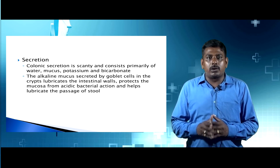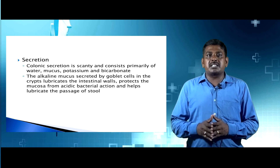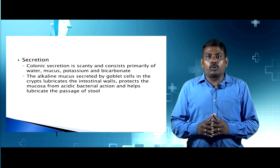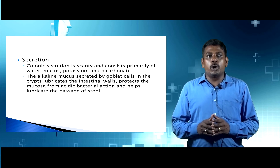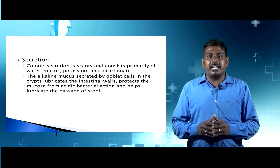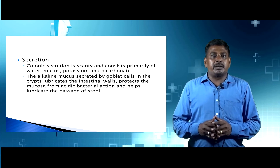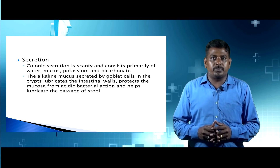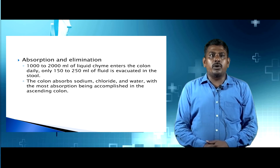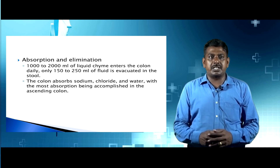Colonic secretion is scanty and consists primarily of water, mucus, potassium, and bicarbonate. The alkaline mucus secreted by goblet cells in the crypts lubricates the intestinal products, protects the mucosa from acidic bacterial action, and helps lubricate the passage of stool.